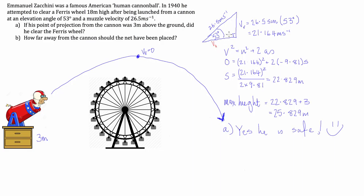The horizontal component will be found by taking our muzzle velocity, 26.5, times the cosine of 53 degrees because this is the adjacent side to the angle. His horizontal velocity is 15.95 meters per second, and that'll help us later on.